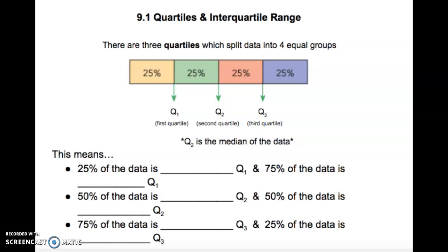There are three quartiles which split the data into four equal groups. So we can see here one, two, three quartiles: the first, the second, the third quartile, and it splits the data into four equal groups. Each group is 25%. Also here we can see Q2 is the median of the data, which means it's the middle number.